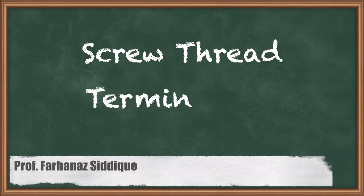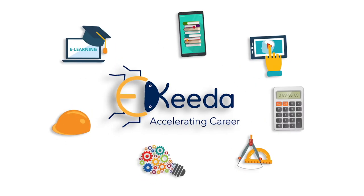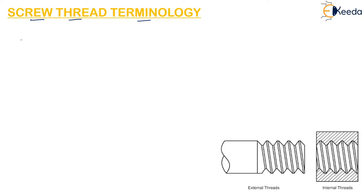Hello students, today let us discuss the topic screw thread terminology. When helical grooves are formed on the exterior, the thread is called an external thread. External threads are formed outside or on the exterior surface of a cylindrical shape.